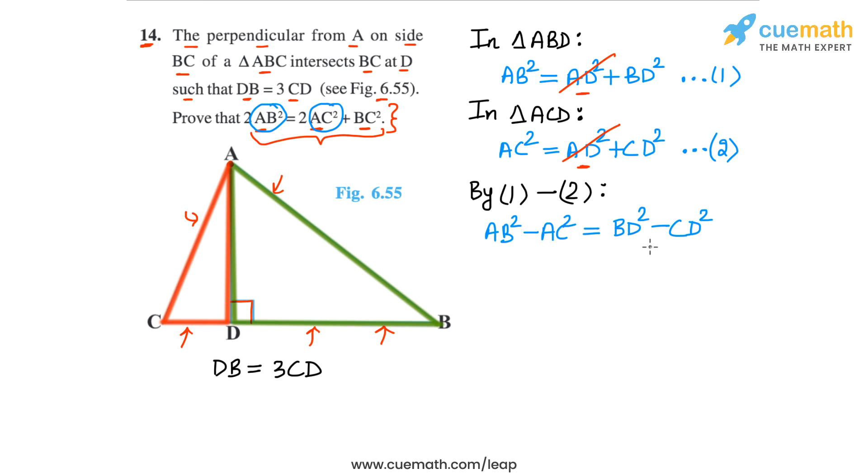To calculate BD square minus CD square, let's write both of these segments BD and CD in terms of BC. DB is thrice of CD, and DB plus CD is equal to the entire segment BC. This tells us that DB will be equal to 3/4 of BC and CD will be equal to 1/4 of BC.